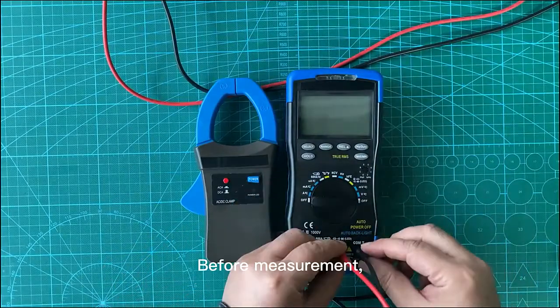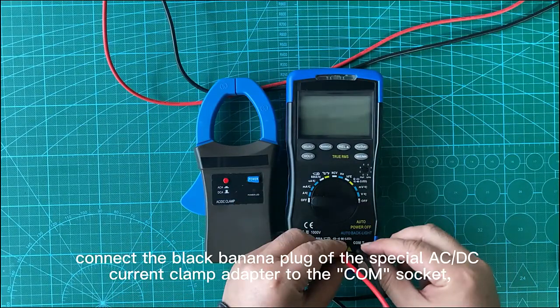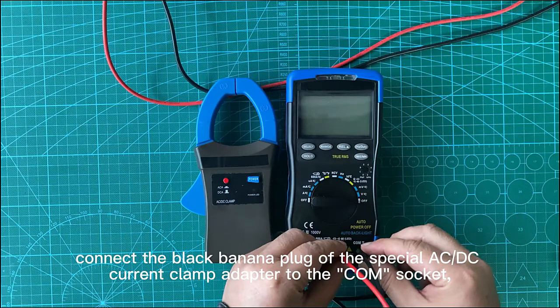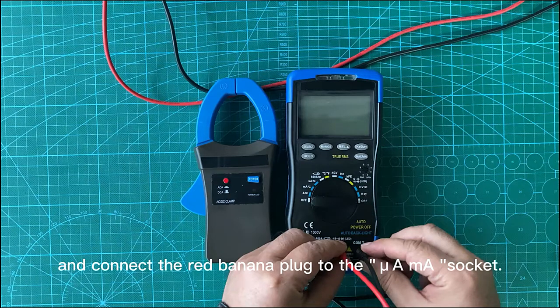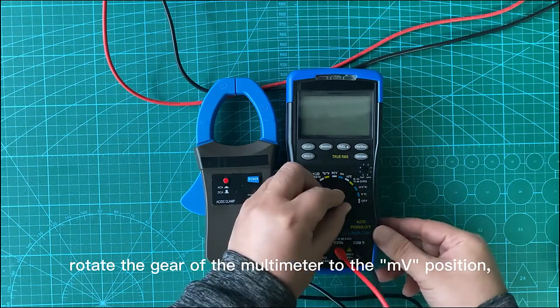AC current measurement: Before measurement, connect the black banana plug of the special AC/DC current clamp adapter to the COM socket and connect the red banana plug to the mV/mA socket. Rotate the gear of the multimeter to the mV position.